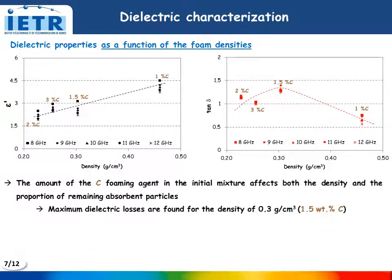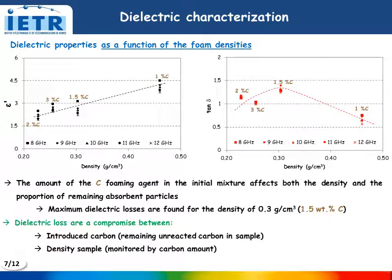Here are presented the dielectric properties of the same samples as a function of the foam densities. The real permittivity presents a linear evolution as a function of the density, independently of the carbon percentage. The losses increase with density before decreasing for the last sample. This result confirms that the dielectric losses are a compromise between the carbon introduced in the mixture and the unreacted carbon remaining in the foam sample, but also the density of the sample, which is also monitored by the carbon percentage.